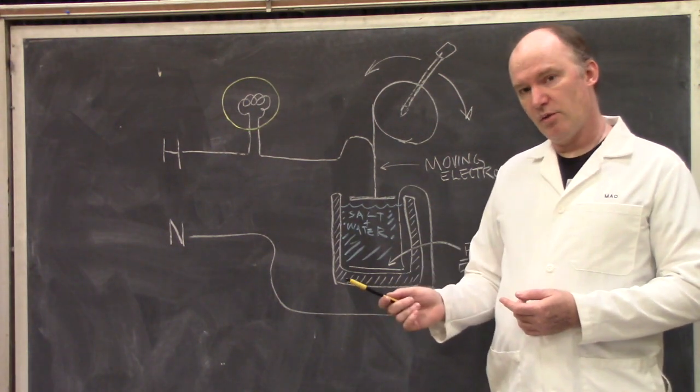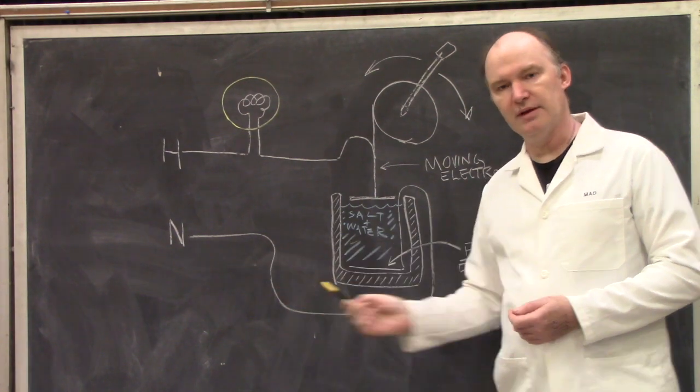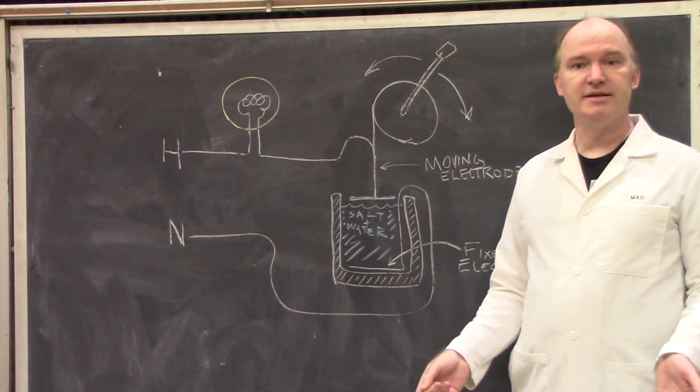Now, in the resistance dimmer episode, I did have someone ask why the hot was hooked up to the load and the neutral was hooked up to the dimmer. That's how I wired our resistance dimmers.